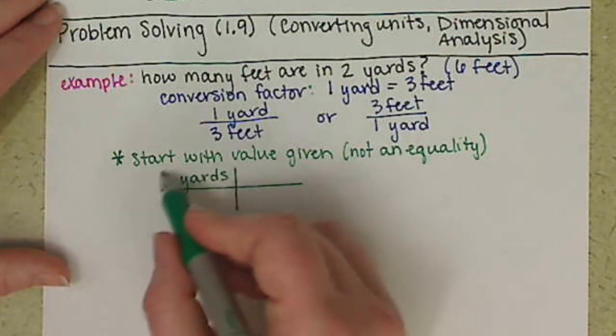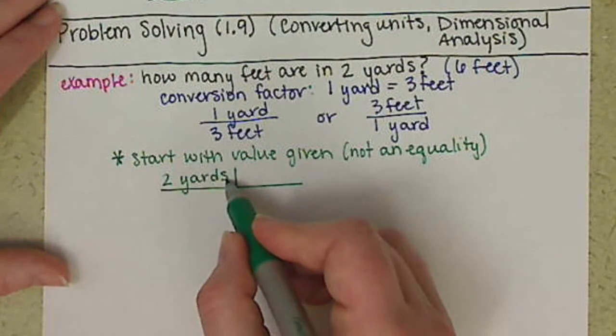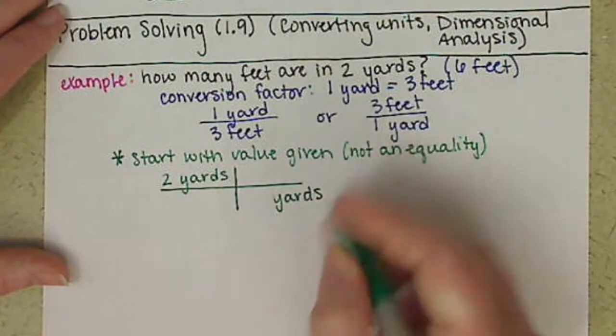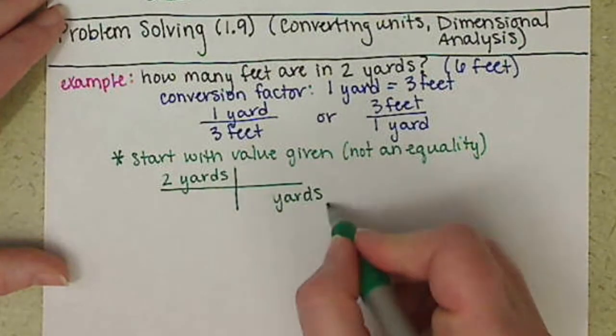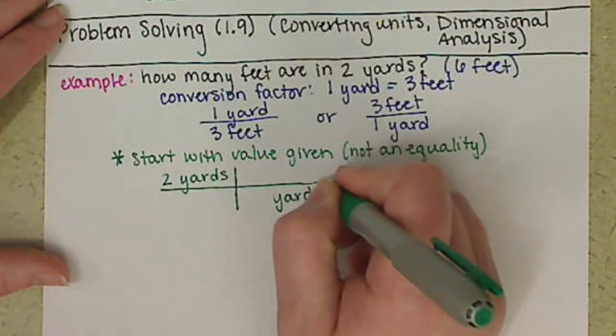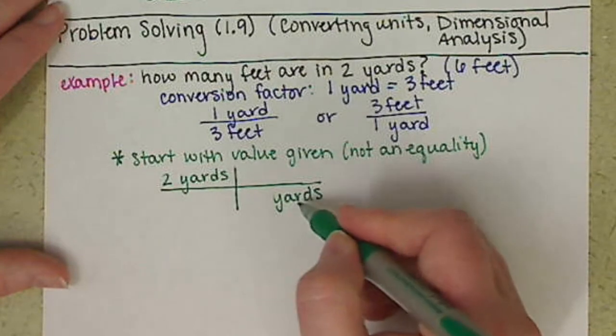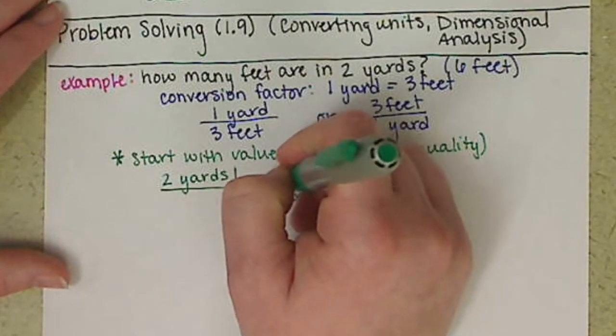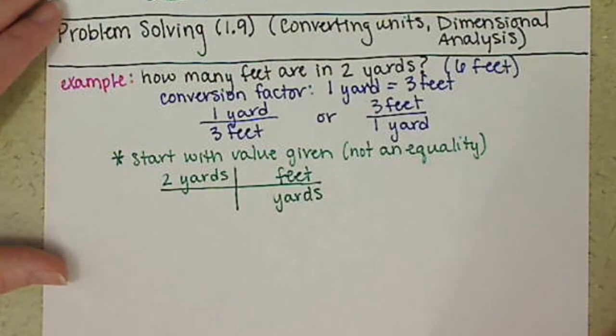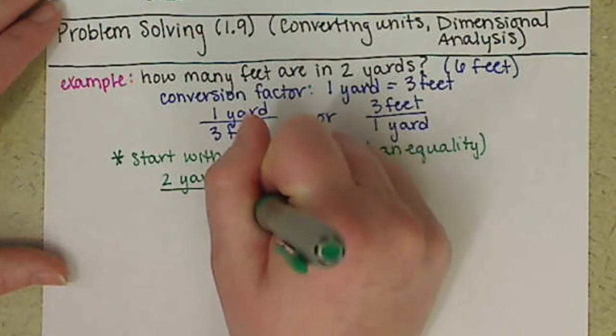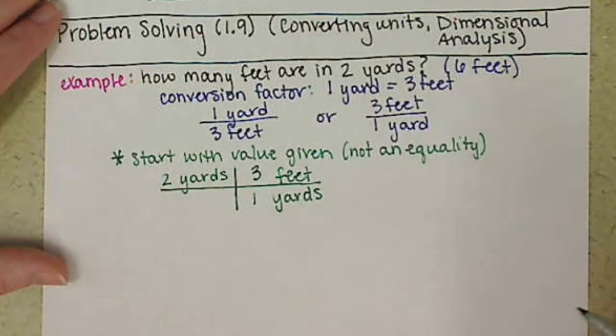When I do conversion factors or dimensional analysis, I use what I call a railroad where I put these railroad ties. I want to convert my units from yards to feet, so yards start in my numerator. I want to put yards down in my denominator so that those units cancel out. Then I'm using this conversion factor, this equality, so I can move from yards to feet. I fill in three feet and then fill in my equality, so for every one yard I have three feet.